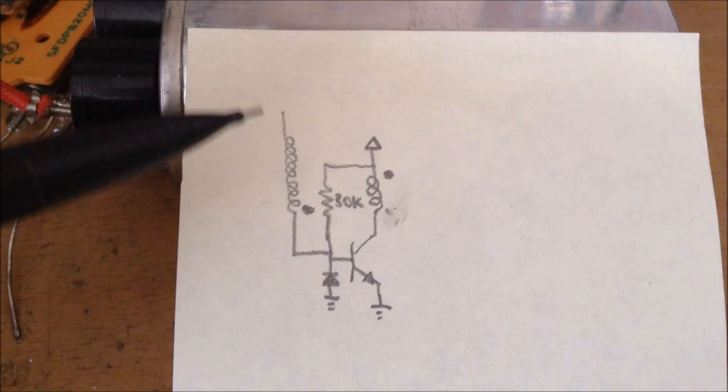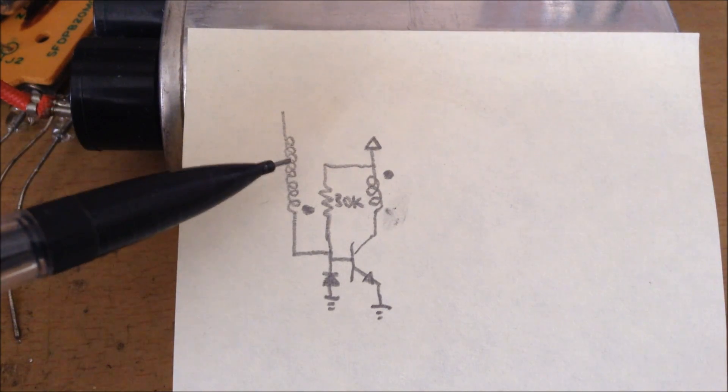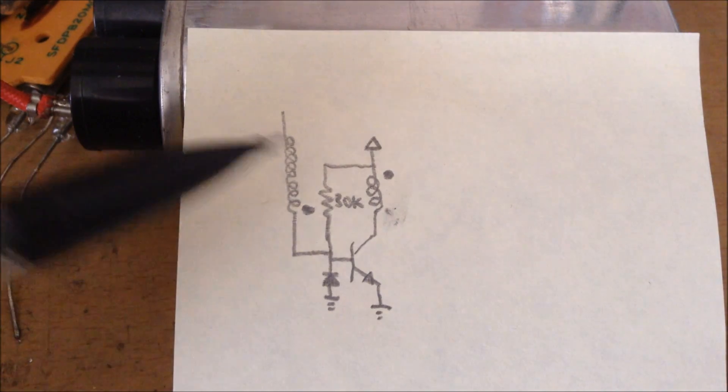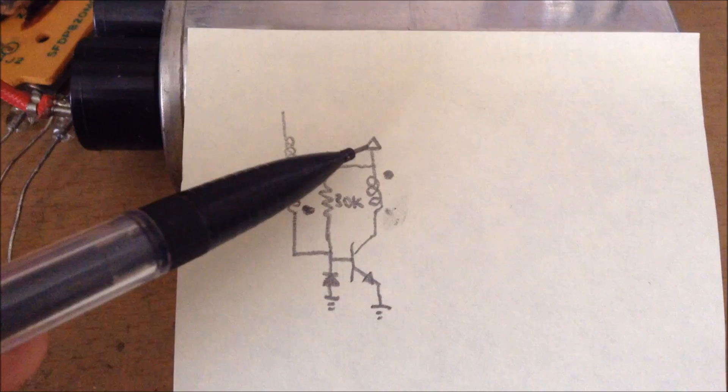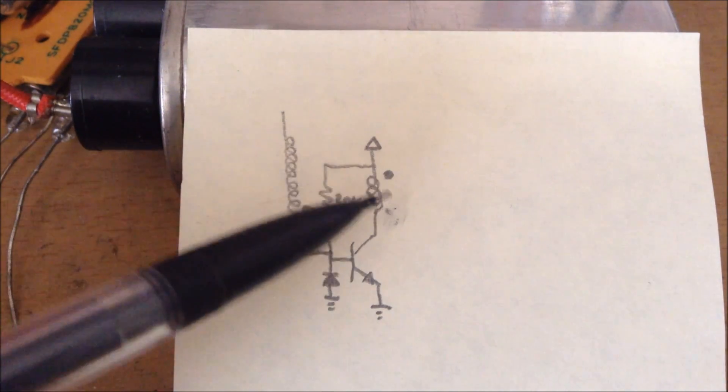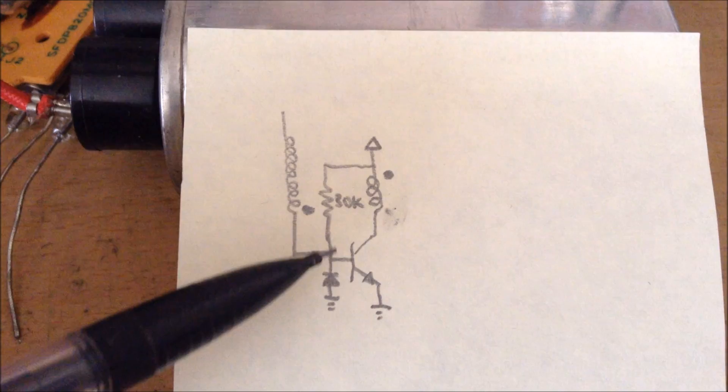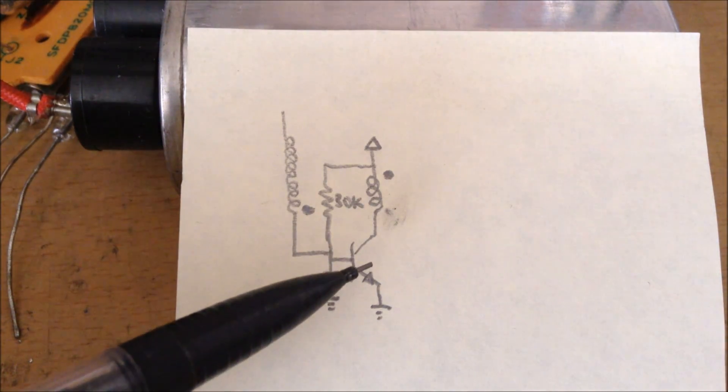This is the schematic for my Slayer Exciter. This coil right here is my 1200 turn coil that I showed how to make in a previous video. This coil is a 4 turn coil. What happens is when you apply 18 volts to the positive, the voltage flows through this 30k resistor into the base of the transistor, turning it on.